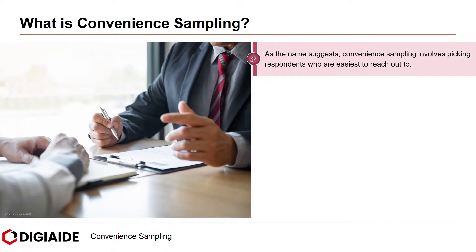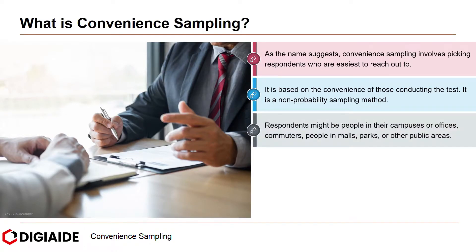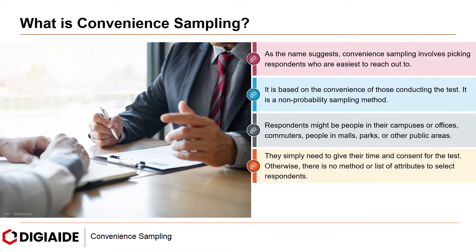As the name suggests, Convenience Sampling involves picking respondents who are easiest to reach out to. It is based on the convenience of those conducting the test. It is a non-probability sampling method. Respondents might be people in their campuses or offices, commuters, people in malls, parks, or other public areas.